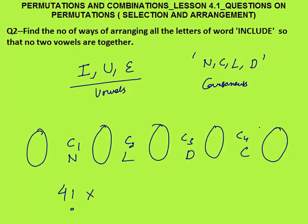Vowels should come in between these consonants so that no 2 vowels are together. The vowels are 3 but the available seats are 5. So 3 vowels have to be arranged but the number of places is 5. First I need to select any 3 places out of 5 places — that can be done in 5C3 ways. Let's say 3 places are selected; I, U, and E will come in any of those 3 places. Now 3 vowels in the 3 selected places can be arranged in 3 factorial ways. That will be your final answer.